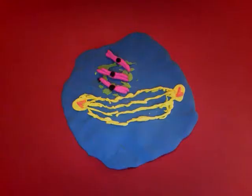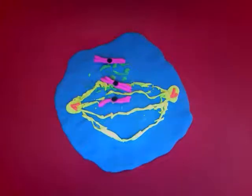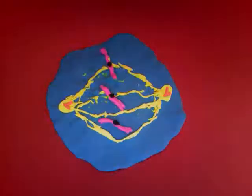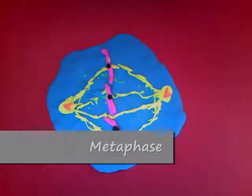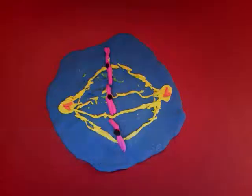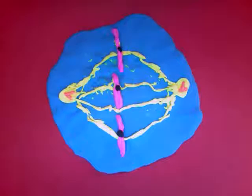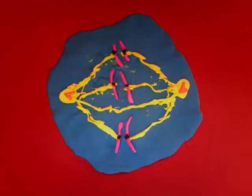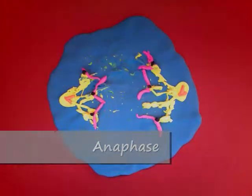As we move into metaphase, notice that the nucleolus and nuclear envelope have dissolved. The spindle fibers attach to the kinetochores, which are specialized proteins located at the centromeres. Metaphase is the longest-lasting phase of mitosis. It occurs when the centrosomes are at opposite poles and the chromosomes line up on the metaphase plate, attached to the spindle fibers by their kinetochores. In anaphase, the cohesive bonds between sister chromatids fall away, and each becomes a true chromosome.